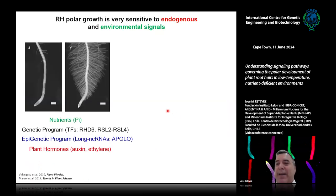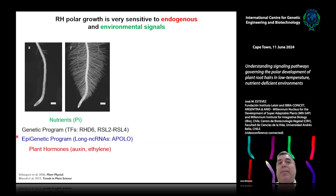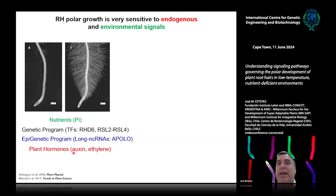Why do I study root hairs? Because for me this is a very nice system where single plant cells are able to integrate different kinds of signals. You have a nutrient signal coming from the soil, a genetic program controlled by several transcription factors, an epigenetic program — for example, we identified a long non-coding RNA called Apollo — and these plant cells also integrate endogenous signals like hormones, for example auxin and ethylene.